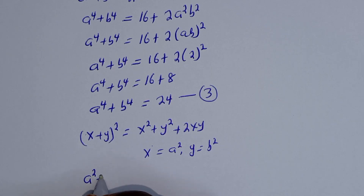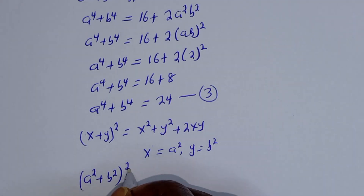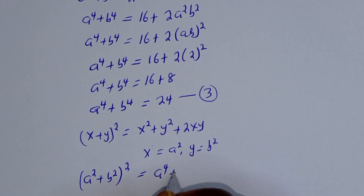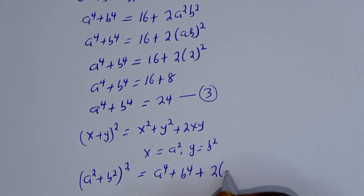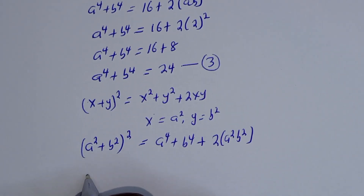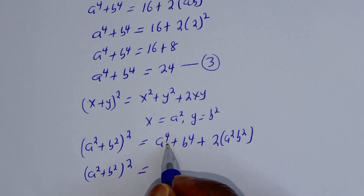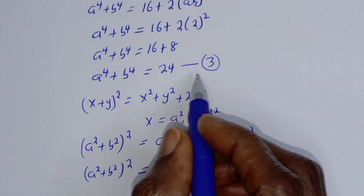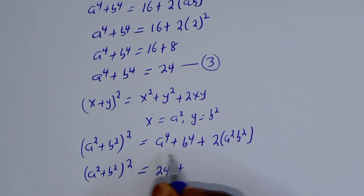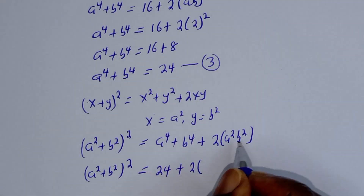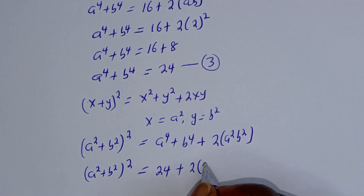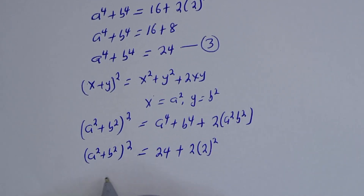We have (a squared plus b squared) all squared equals a to the power 4 plus b to the power 4, which from equation 3 is 24, plus 2 times (ab) squared. Since ab equals 2, this is 24 plus 2 times 4, giving us 24 plus 8.